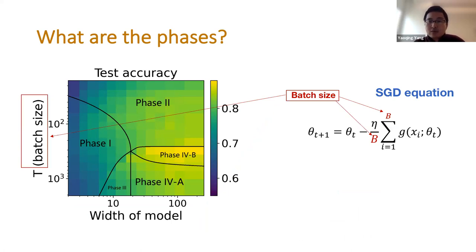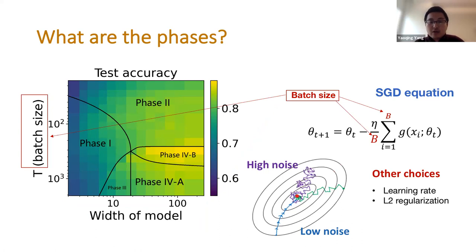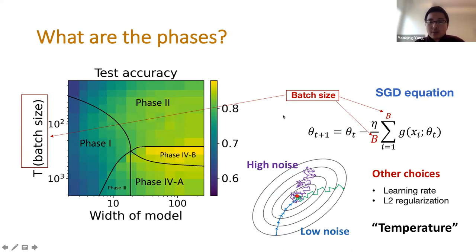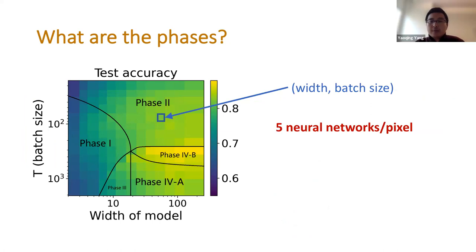The y-axis denotes the mini-batch size used in SGD. We also studied other choices such as learning rate and regularization. These choices on the y-axis represent the amount of noise in your SGD algorithm — for example, a large mini-batch size means smaller noise because you're averaging over more samples. These parameters are called the temperature parameters in statistical physics of learning.